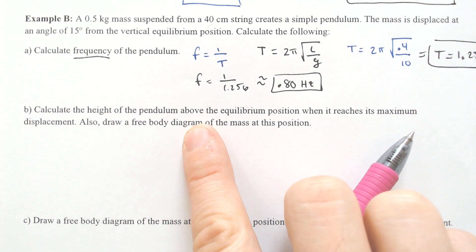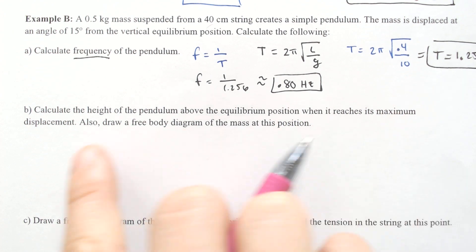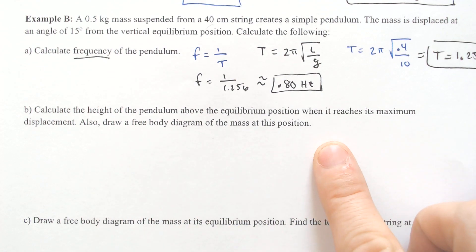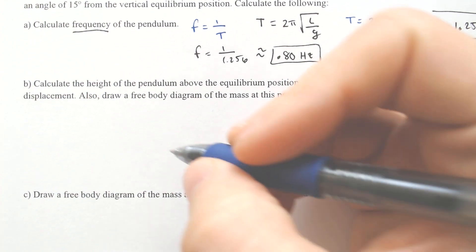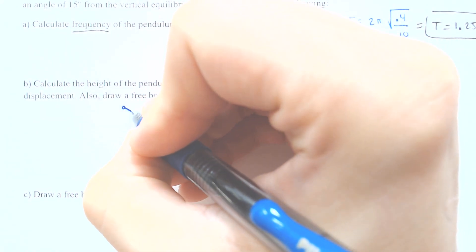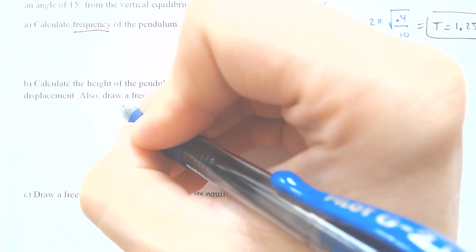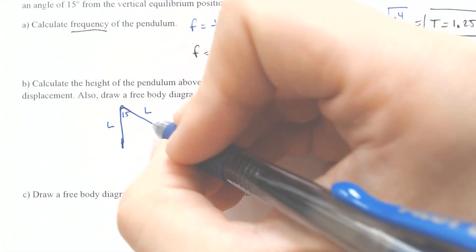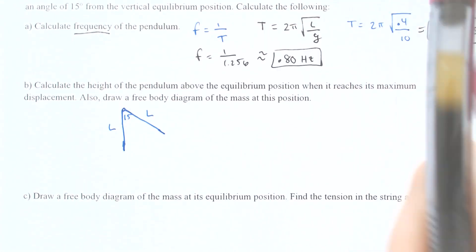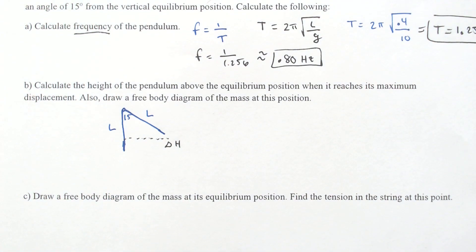Calculate the height of the pendulum above the equilibrium position when it reaches its maximum displacement, and draw a free body diagram of the situation. Essentially, we have the pendulum with a length L and the 15-degree angle — not to scale. This other side would also be L, and at this moment we would have a change in height — that is what we're looking for.